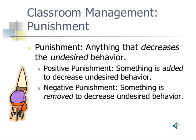In contrast to reinforcement, punishment presents a strong stimulus that decreases the frequency of an undesired behavior. With positive punishment, something is added to decrease the undesired behavior — for example, giving a student detention for failing to do their homework. With negative punishment, something is removed to decrease the undesired behavior — for example, taking away a student's recess time for not following class rules.